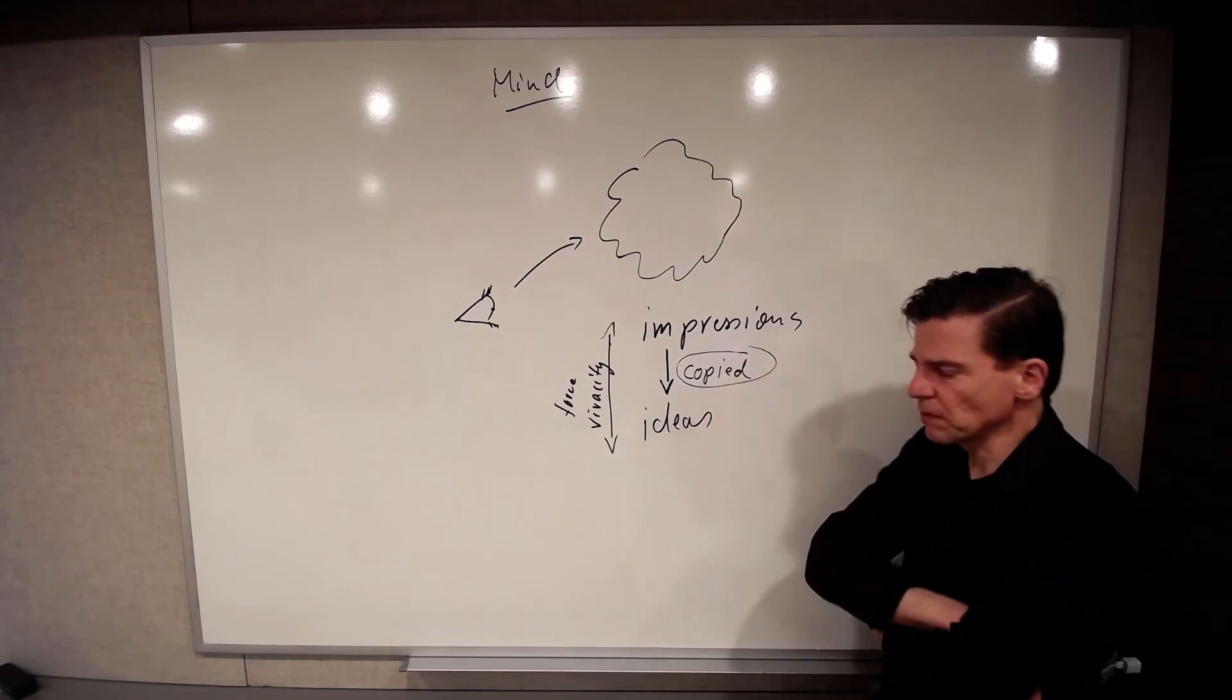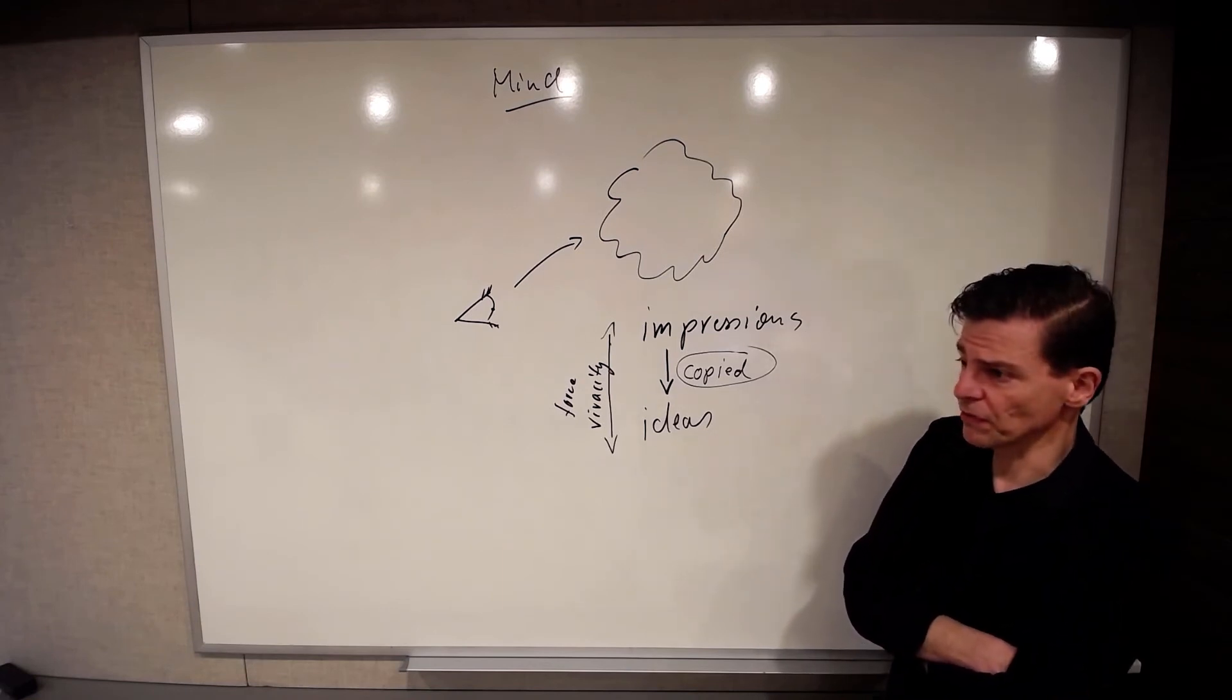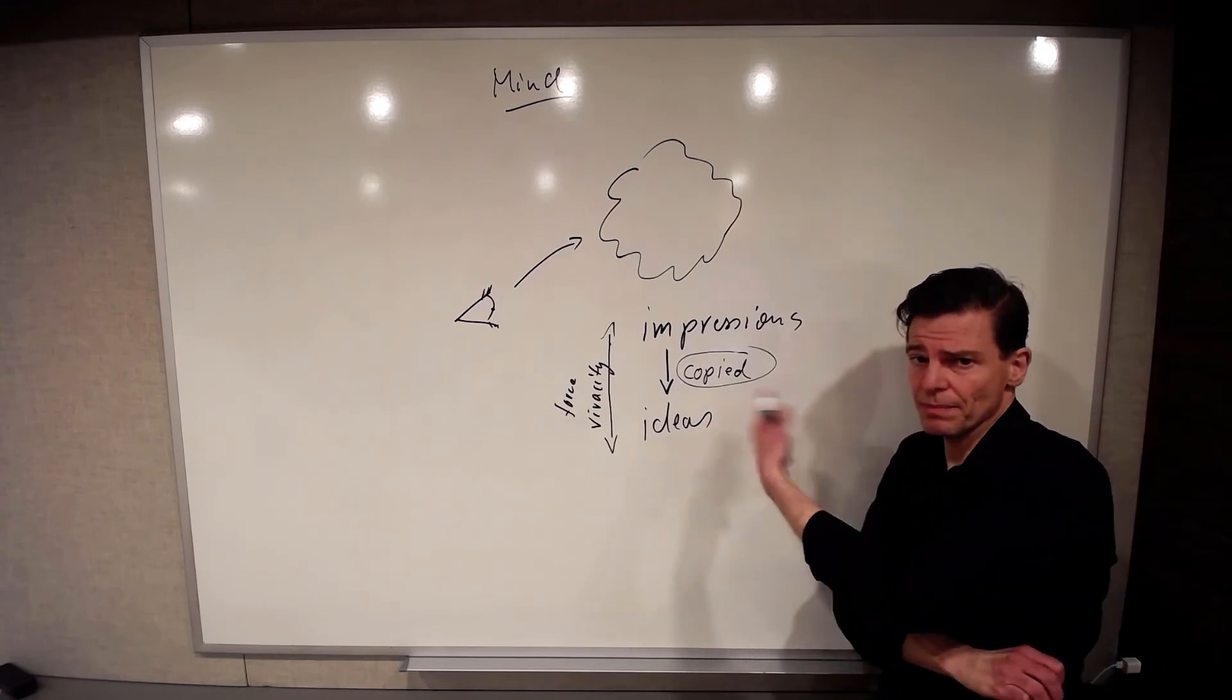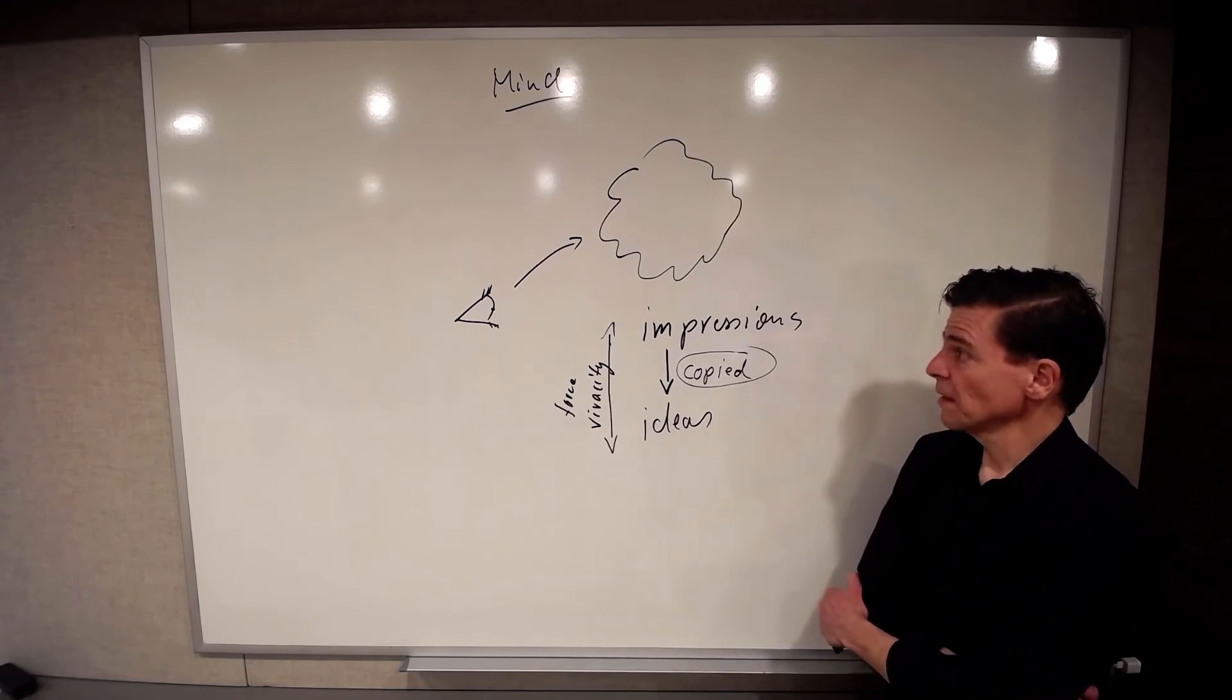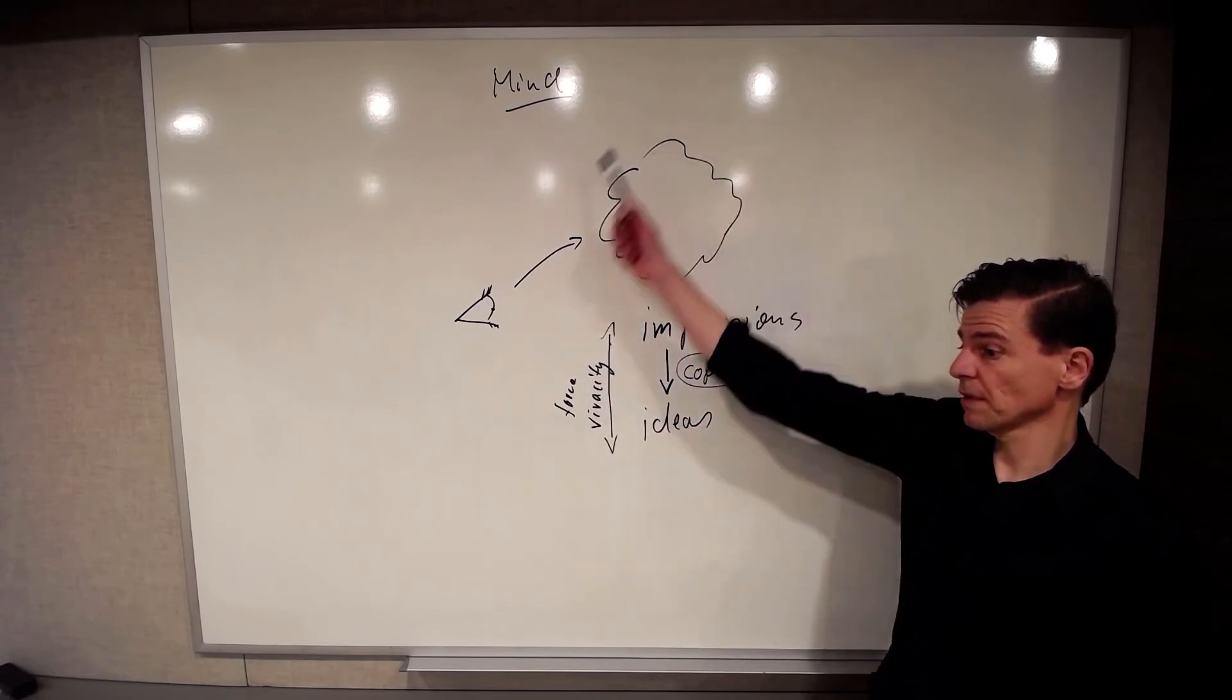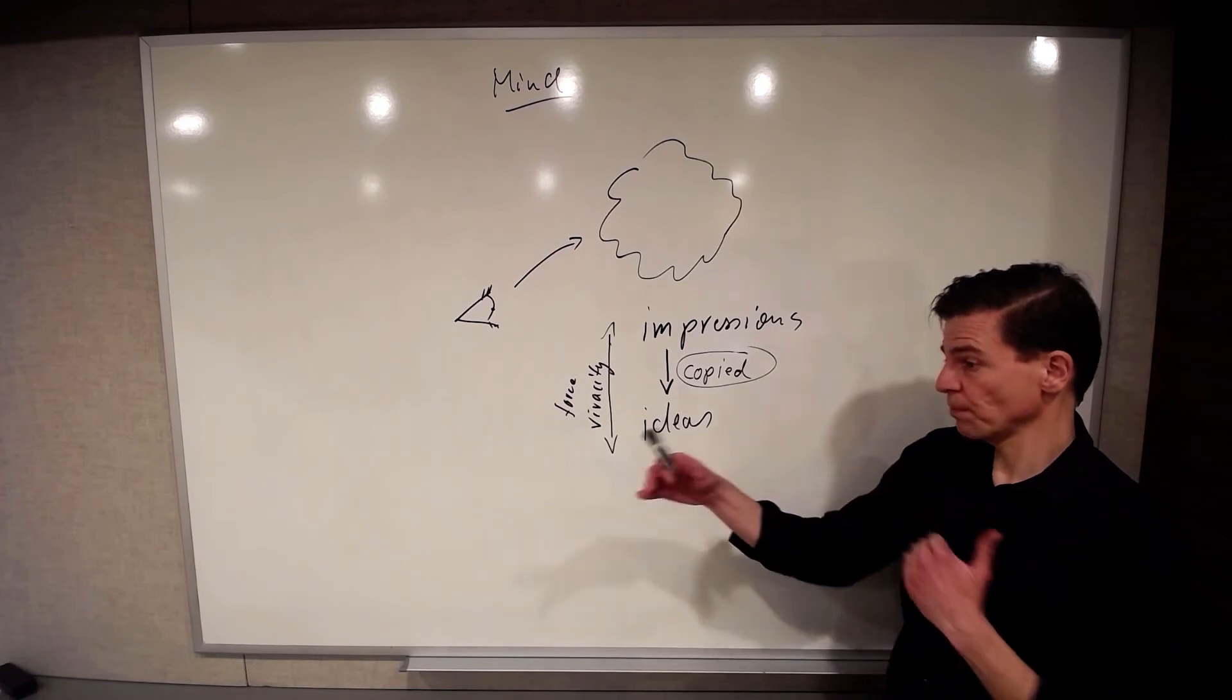And there's quite a bit of literature out there on the nature of this copy principle and whether it's an a priori principle in its own right, and whether Hume is actually entitled to something like that. But for now, let's sidestep all of that and just realize that so far, Hume seems to firmly agree with Descartes' picture of the mind up to this point.